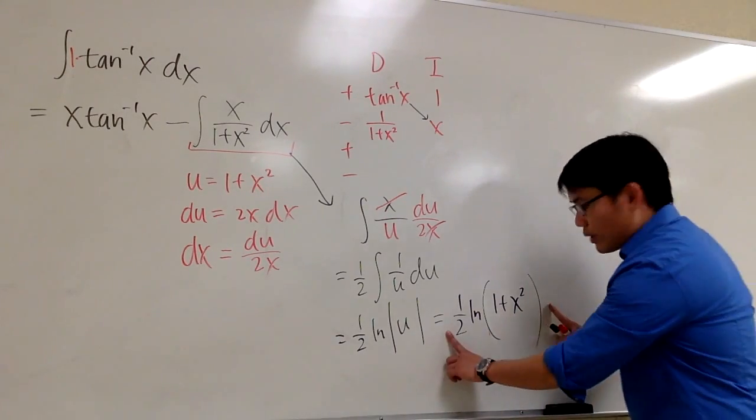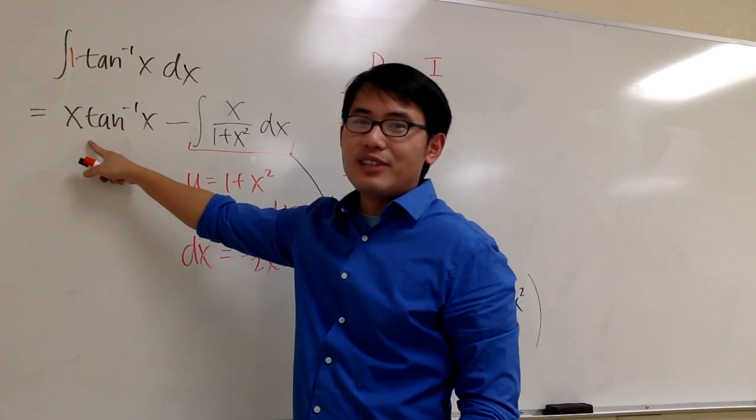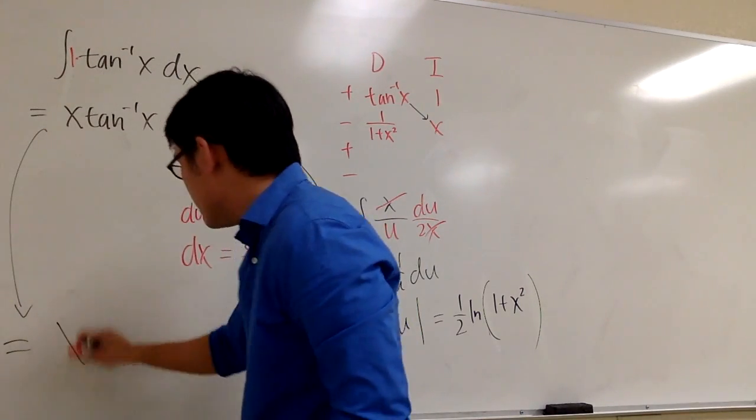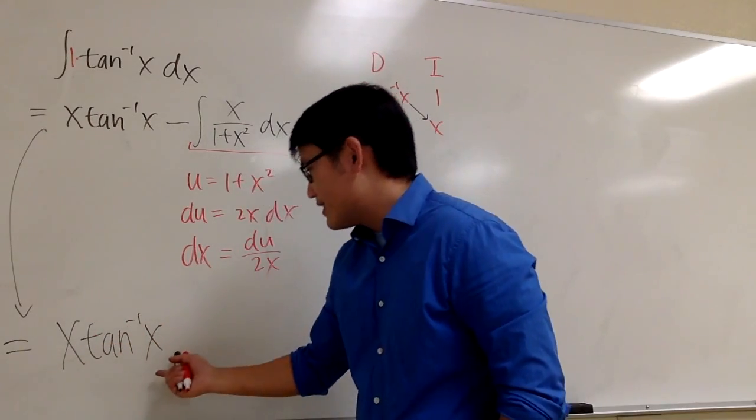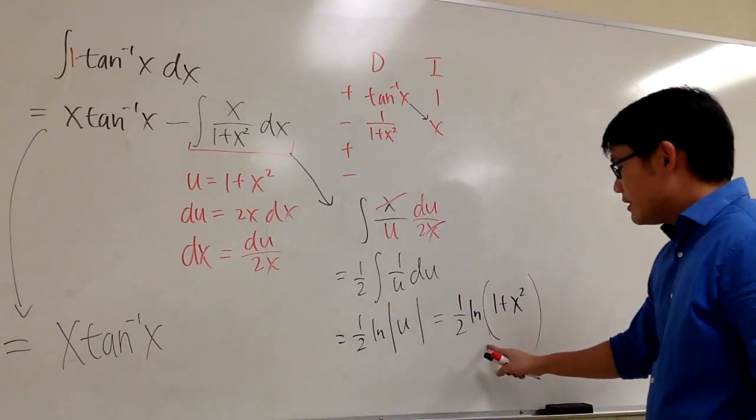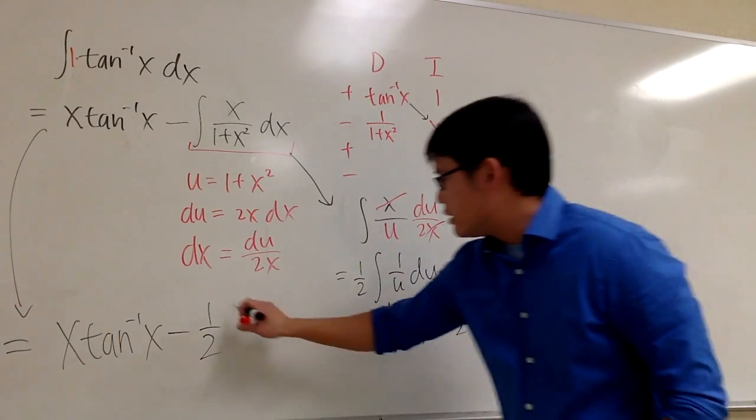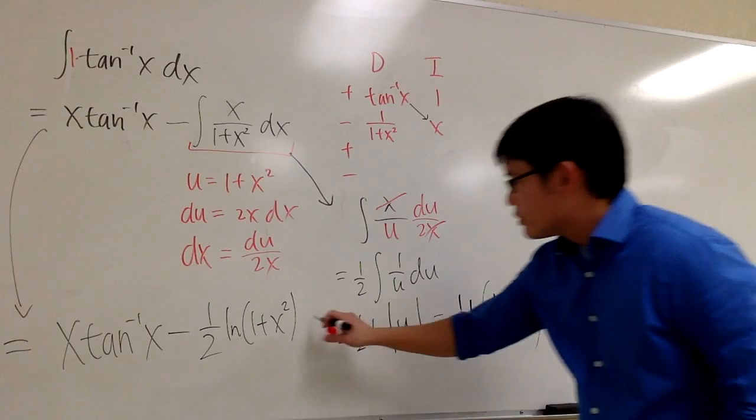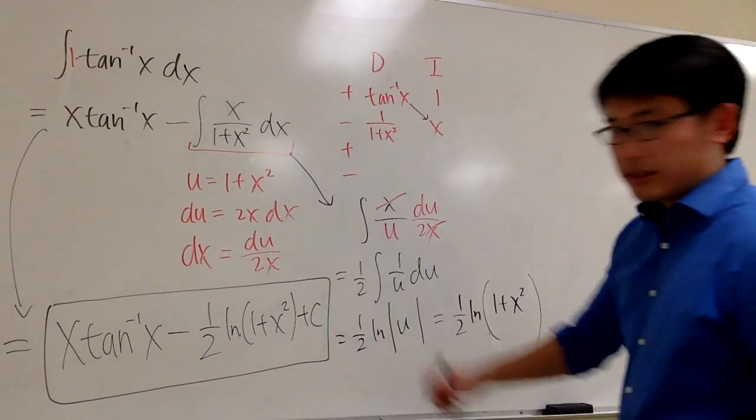Anyways, this right here, it's not the final answer. Don't forget, you still have x times inverse tangent x in front. All together, we'll just kind of go from here to here. The final answer for this is x times inverse tangent x, and this. So don't forget, we subtract. 1 half ln parentheses 1 plus x squared, and we're done. Put a plus c at the end. Box the answer. That's it.